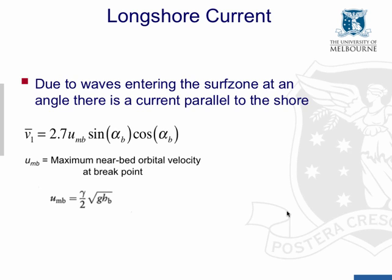When waves don't arrive at the beach parallel to the coastline — when they have some angle with the coastline — they produce a current parallel to the shore, called the longshore current. In the surf zone, there is a lateral current produced by breaking waves, and the component of that current running parallel to the beach is what produces this longshore current.